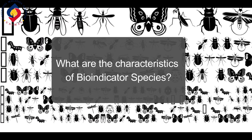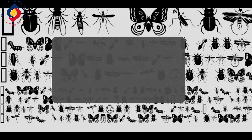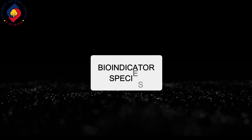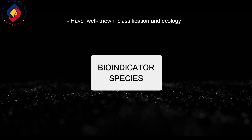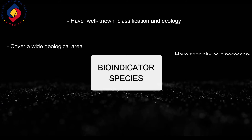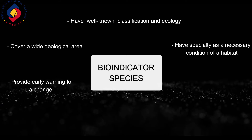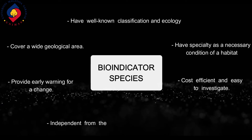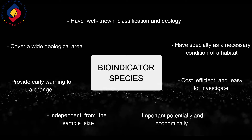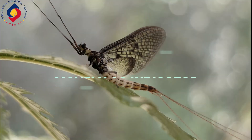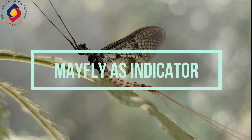What are the characteristics of bioindicator species? Bioindicator species should have a well-known classification in ecology, cover a wide geological area, help facilitate the necessary conditions of a habitat, provide early warning for a change, be cost-efficient and easy to investigate, and be independent from sample size, both in importance and economically.